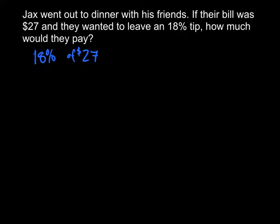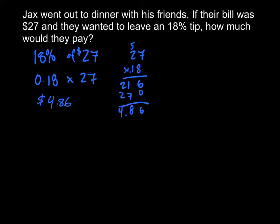So first thing, do start with your three-word sentence, 18% of $27. And we're going to rewrite that as 0.18 times 27, and then we can solve the math, which gives us $4.86 as the tip.